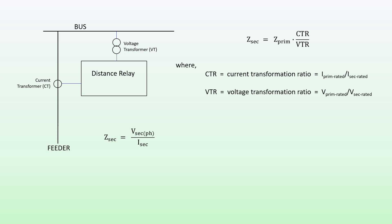The secondary impedance is really the secondary phase voltage divided by the secondary current. The secondary phase voltage is the voltage on the secondary side of the VT presented to the relay, and the secondary current is the current on the secondary side of the CT which is presented to our distance relay. The secondary voltage is our primary phase voltage divided by the VT ratio.